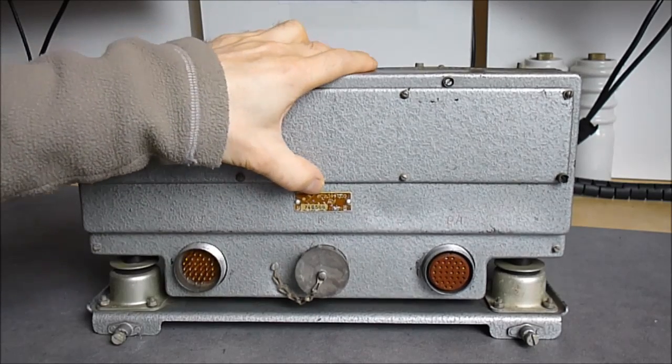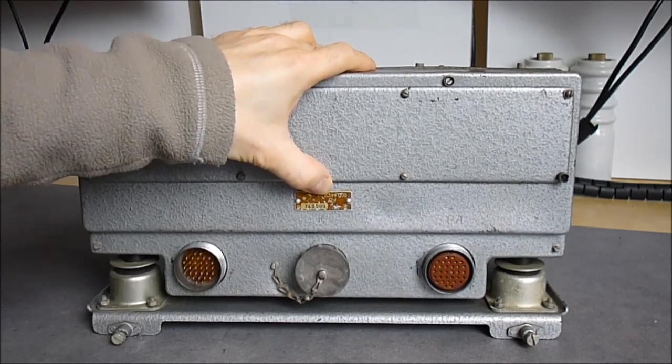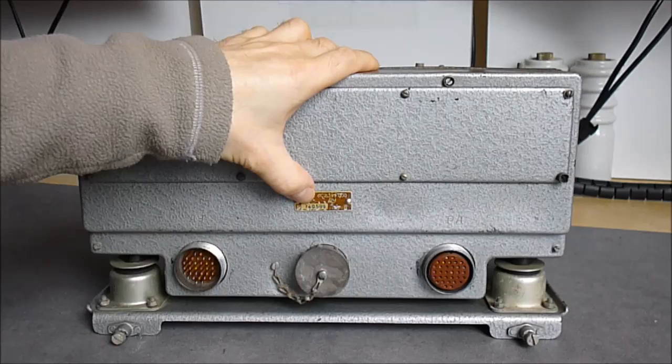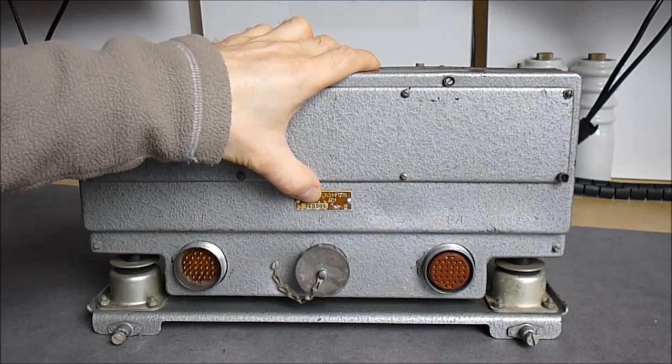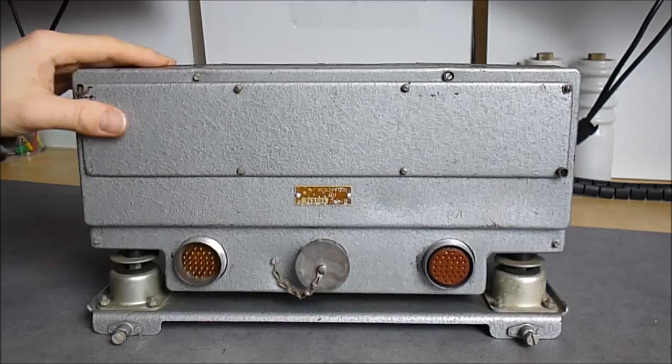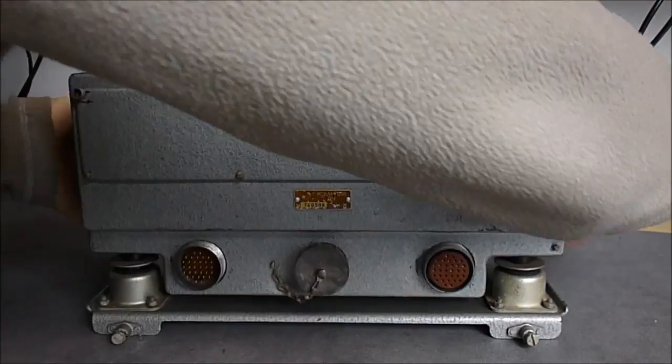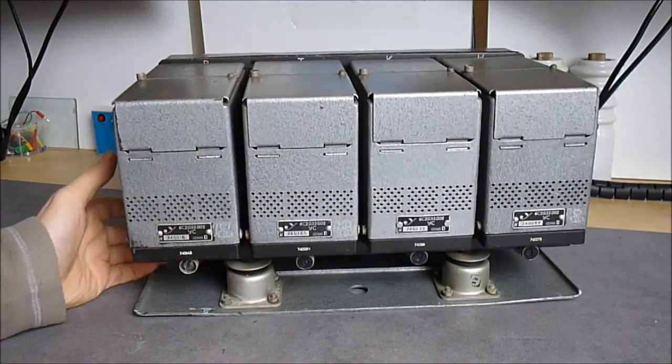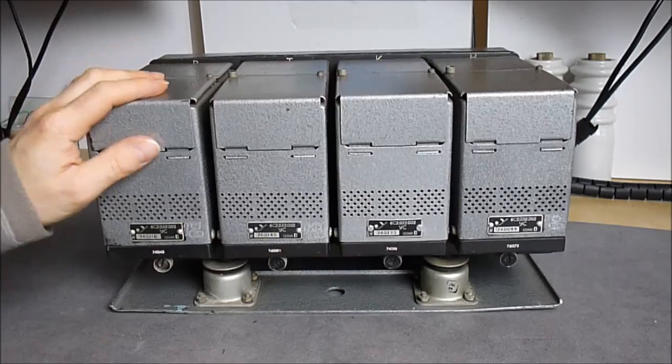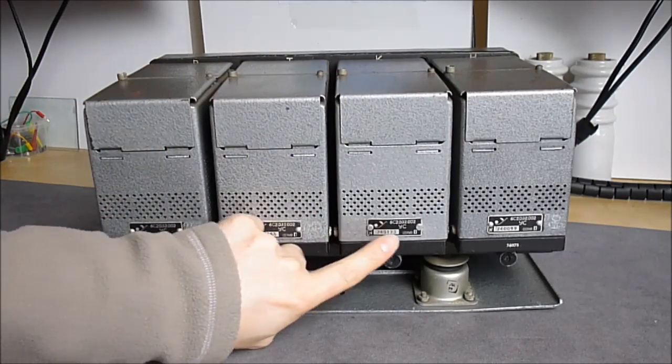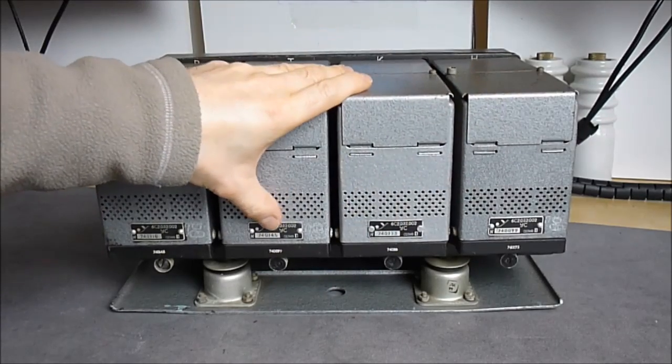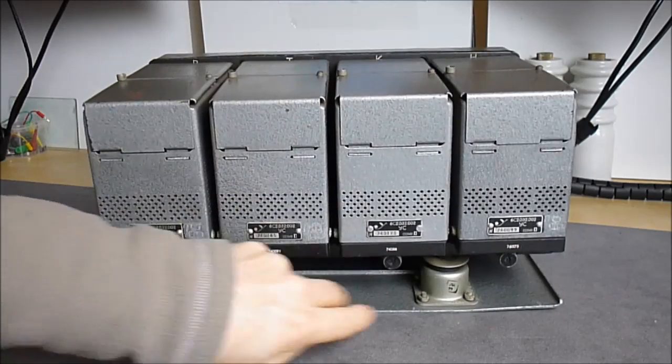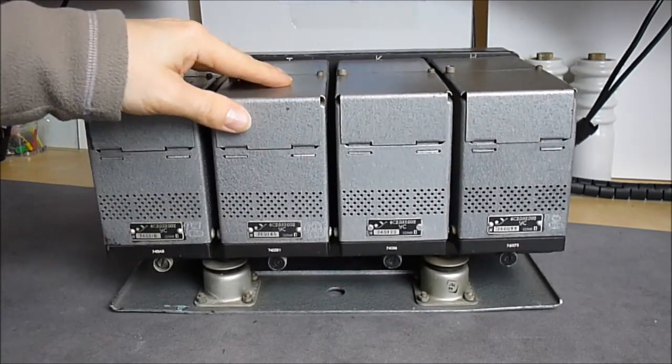We have this front cover here with an access panel. Model number plate here, it says 6S2399000. Serial number 74, it is probably the year, 0588. Okay, so rear side, as you can see, we have four similar modules, exactly the same model number, but the serial numbers are not in a row.